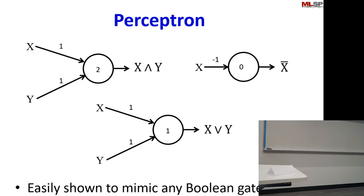Here are the things it can do: a perceptron can be a Boolean function. In these figures, you're looking at a weighted combination of inputs compared to a threshold. The weights are written above the arrows, and the threshold is inside the circle. This figure has a threshold of two — the only way it fires is if both X and Y are active: that's an AND. This one has a threshold of one — it fires if either X or Y are active: that's an OR. This one is a negation with a threshold of zero — if X is one, what comes in as minus one will not fire; but if X is zero, it matches the threshold and fires.